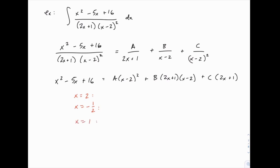When x equals 2, the left-hand side equals 4 minus 10, that's negative 6, plus 16, that's 10, and then on the right-hand side everything with an x minus 2 factor will disappear, so those first two terms will both be 0, and all that's left is c times 5. So that means c equals 2.